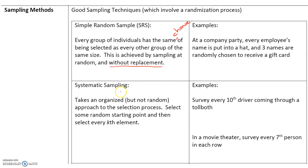Systematic sampling takes an organized but not random approach to the selection process. We select some random starting point and then select every kth element after that starting point. For example, we can survey every 10th driver coming through a tollbooth, or in a movie theater, survey every 7th person in each row.